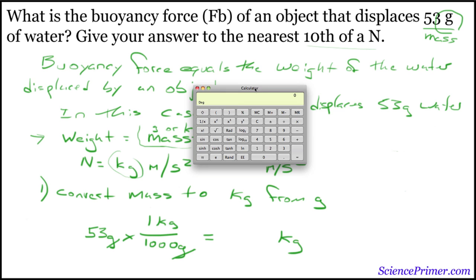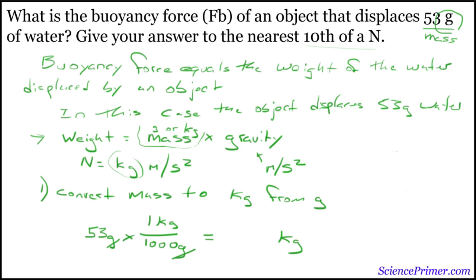Go ahead and bring our calculator over here. We have 53, we're going to multiply by 1, divide by 1,000. And that will equal 0.053. So, the mass we're working with is 0.053.